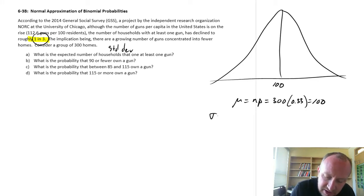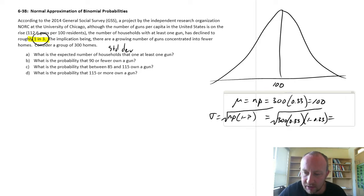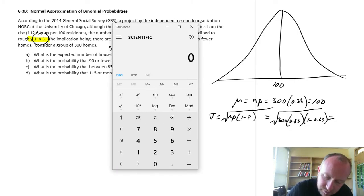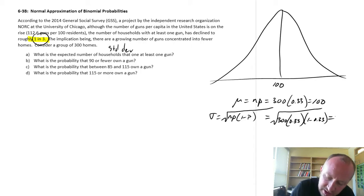Our standard deviation. So this is the square root of np times one minus p. So this will be 300 times 0.33 times one minus 0.33. So this is going to be, let's get the calculator out here. 300 times 0.33 times 0.67 equals square root, so about 8.14.